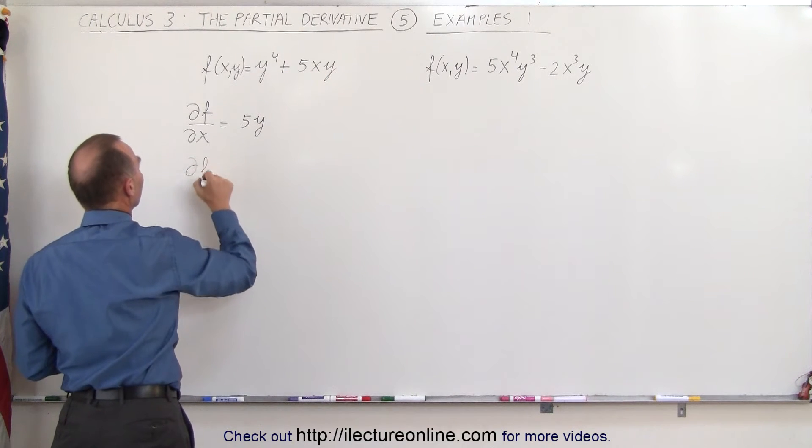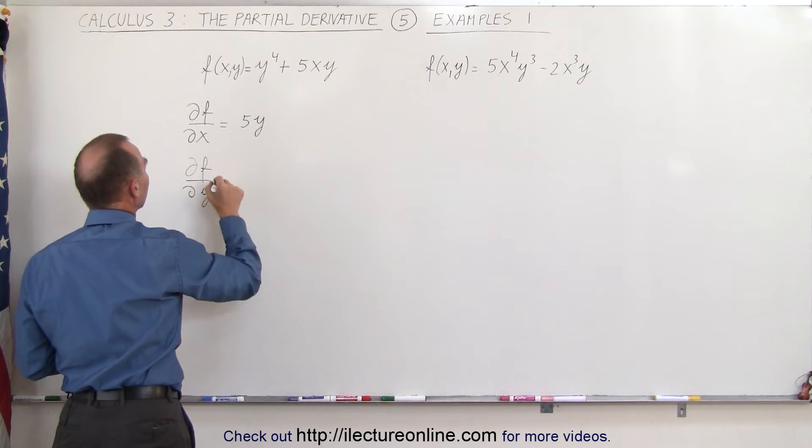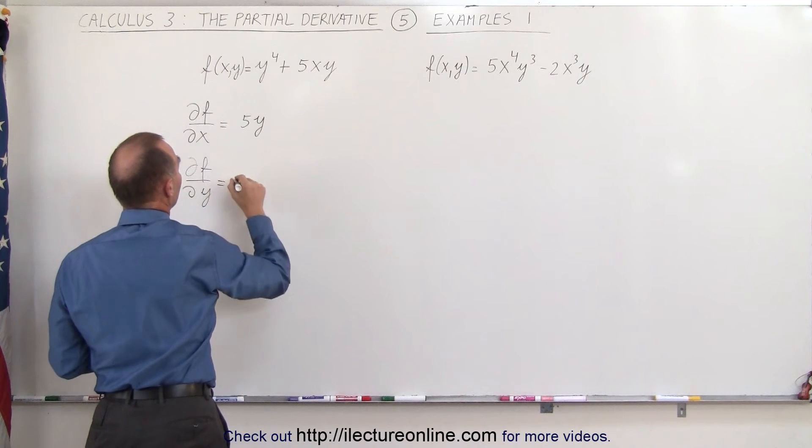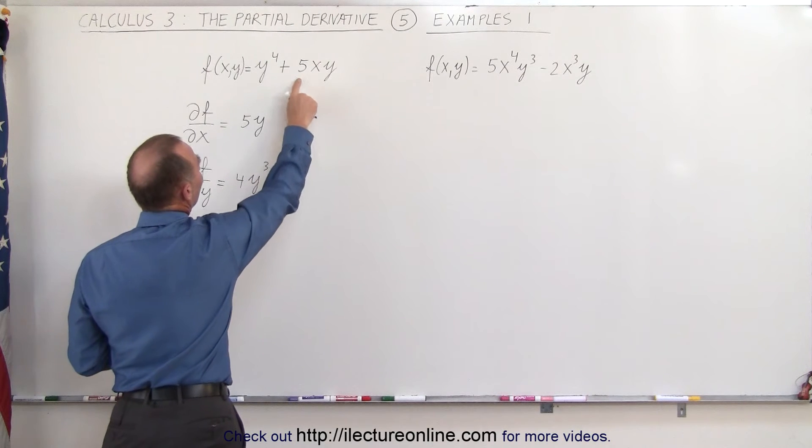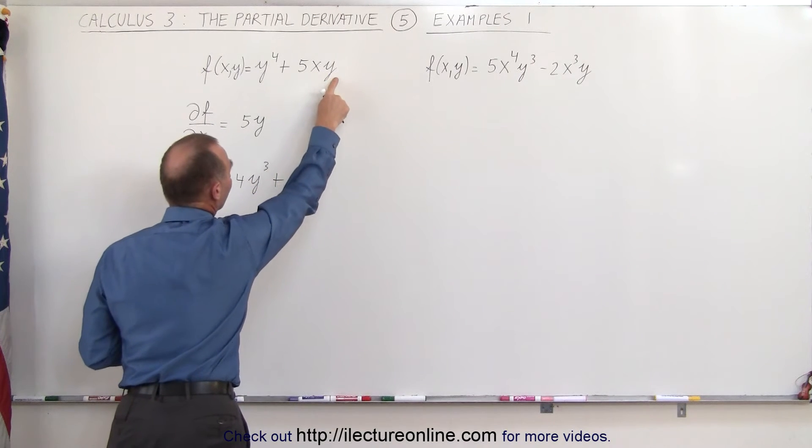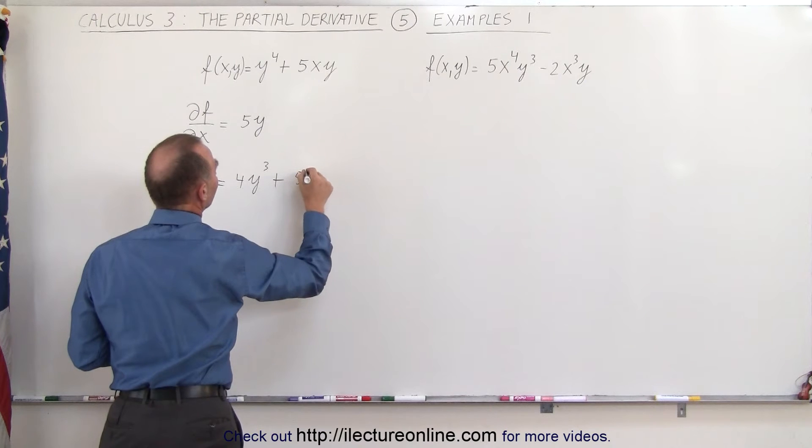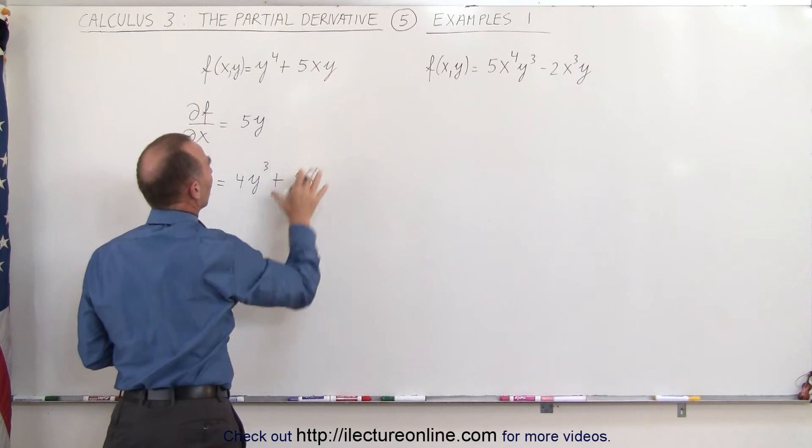The partial of the function with respect to y is equal to... Now notice that here we get 4y cubed plus... And here 5x become the constant, y is the variable, and that gives us 5 times x and the derivative of y with respect to y is equal to 1.